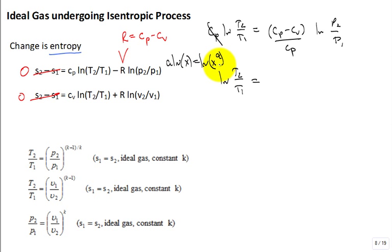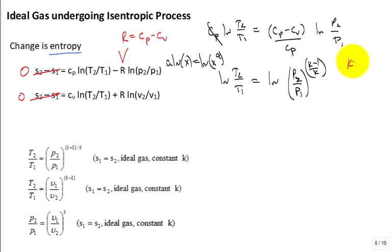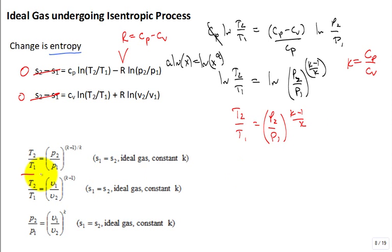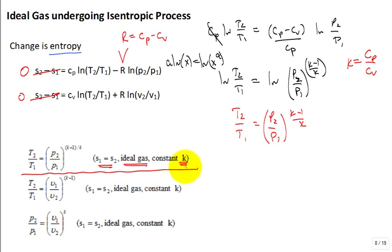Dividing by C sub P and using the rule that A times ln(X) equals ln(X^A), we get the natural log of T2/T1 equals the natural log of (P2/P1)^((K-1)/K), where K is defined as C sub P over C sub V. Exponentiating both sides: T2/T1 equals (P2/P1)^((K-1)/K). There are important restrictions: this applies only for an ideal gas undergoing an isentropic process with constant specific heats. Do not apply it to steam or two-phase regions.